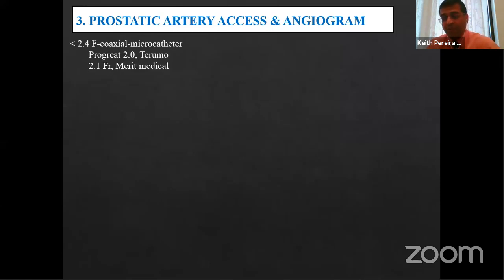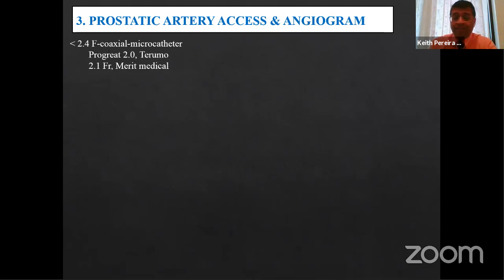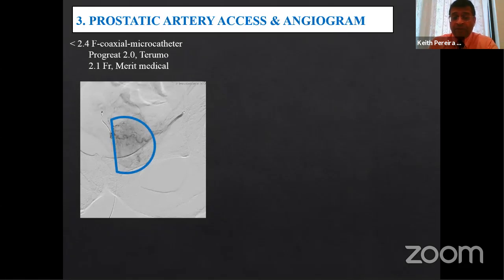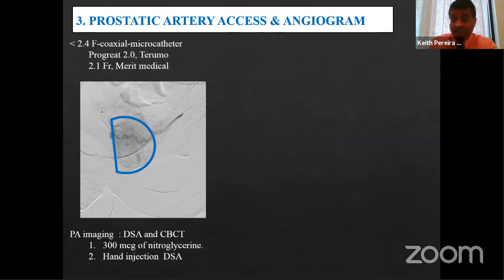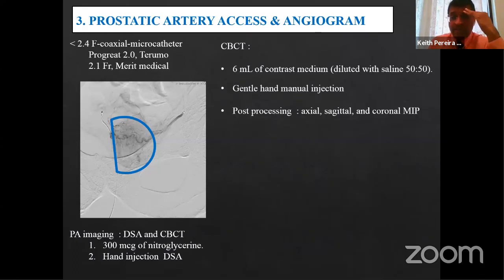Once in position with the microcatheter, you perform a prostatic angiogram. You should see a hemispherical prostate with the prostatic artery perfusing it. Then perform a DSA and a cone-beam CT. Use plenty of nitroglycerin and a hand injection DSA — this is not power injection. Use a 3 cc syringe and gently inject, as this is a very small vessel. For cone-beam CT, use 6 ml contrast medium diluted 50/50 with saline, injecting by hand while the cone-beam CT is running.